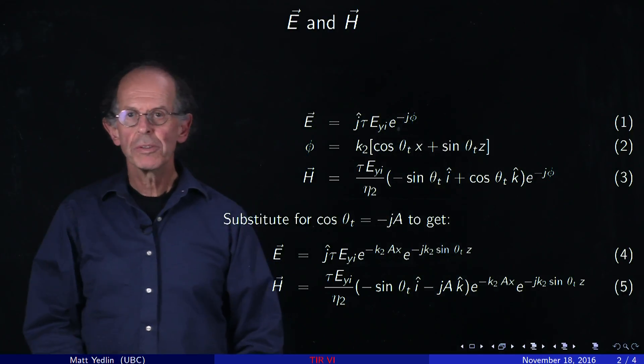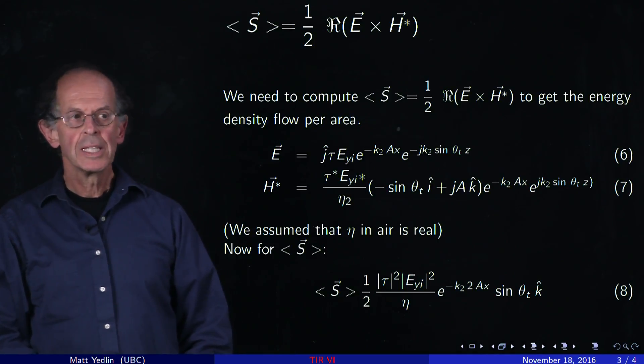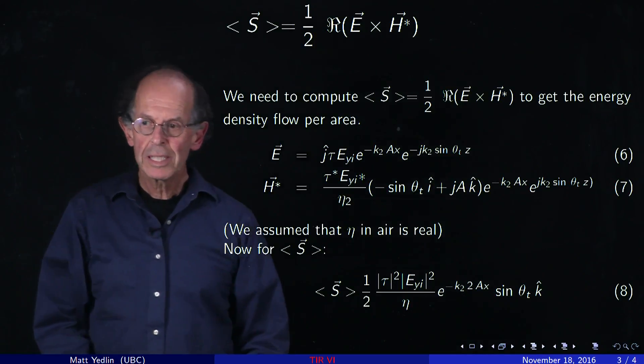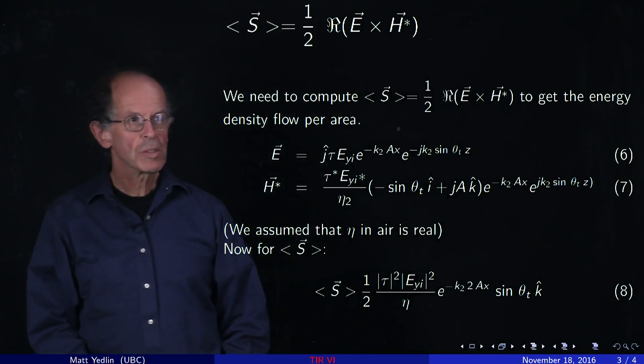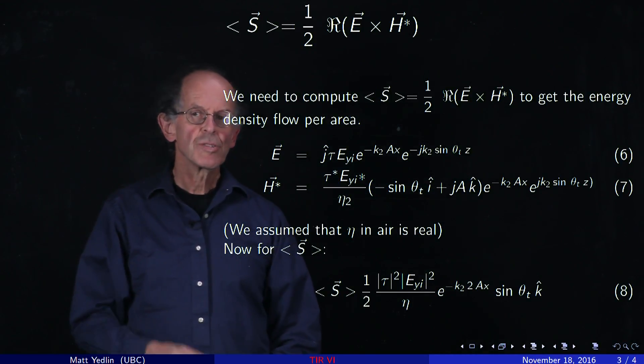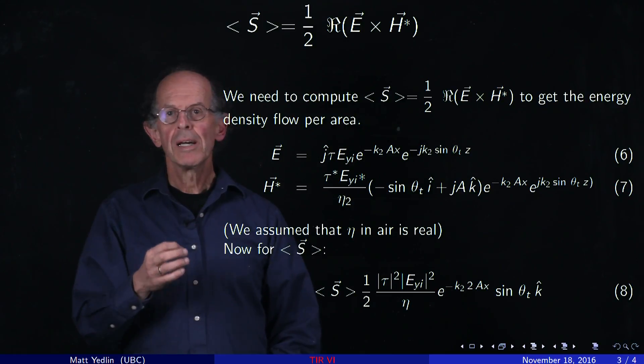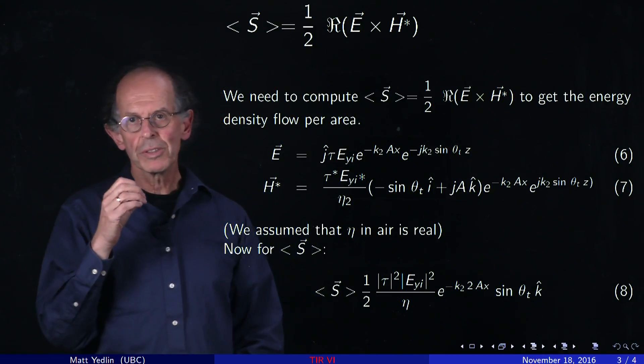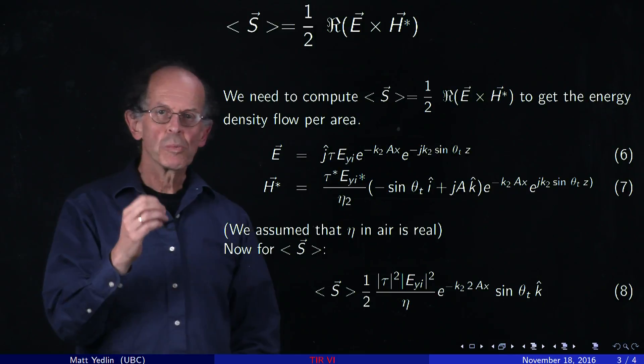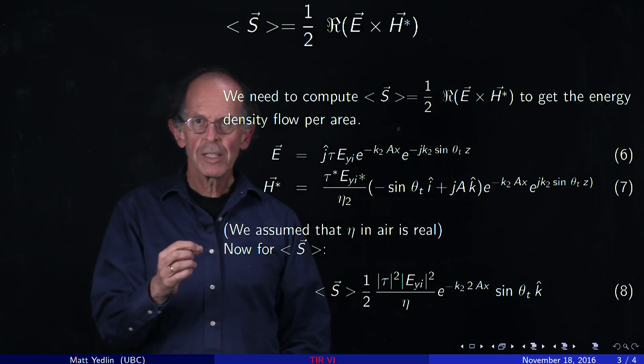What's left is shown on the next panel. There we're computing S. Now S is a cross product. It's exactly the same as what you have in circuits. When you're looking at the real delivered power, it's one half the real, V I star.